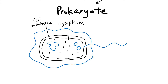Next we have the cell wall, which surrounds the cell membrane and keeps the cell shape. It's really important to know that both prokaryotic cells and plant cells have a cell wall, but they are made up of two different chemicals. As mentioned, the cell wall maintains the cell shape.